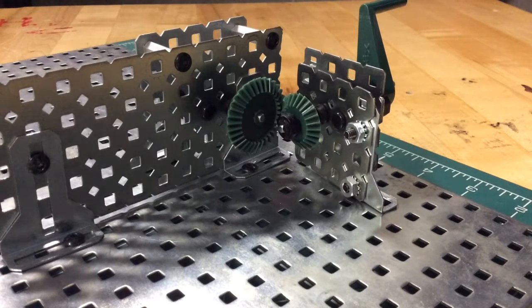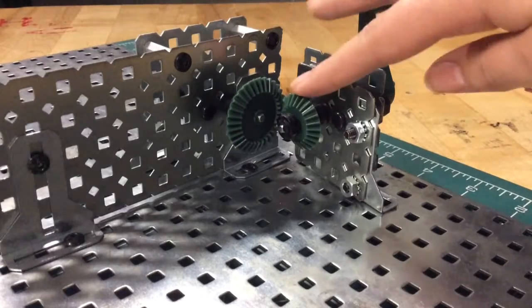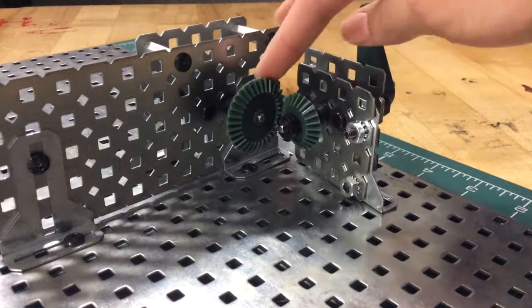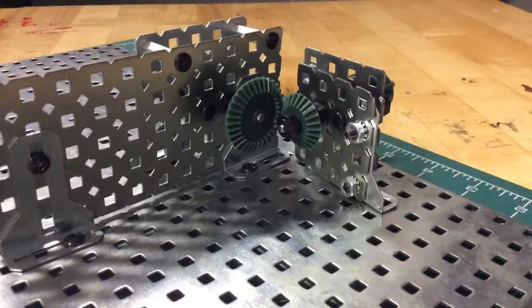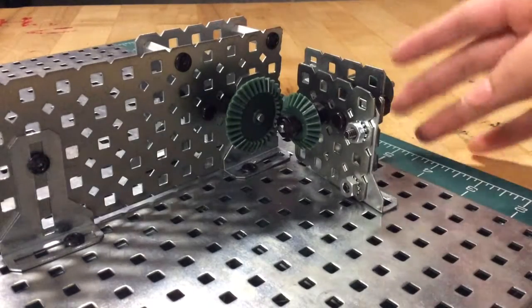Our bevel gear ratio is three to four due to our input gear consisting of 24 teeth and our output gear consisting of 32. We were able to reduce it by eight. Both of our gears are rotary because they turn or rotate.